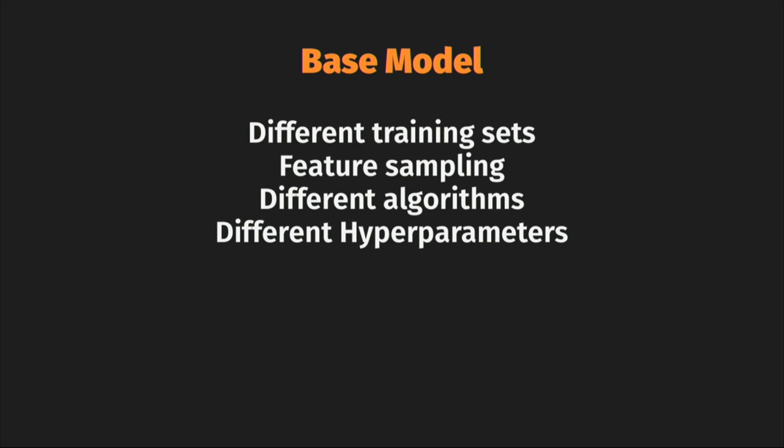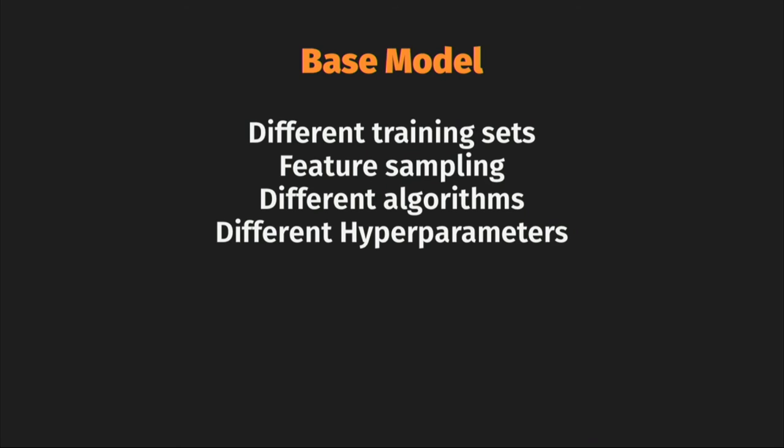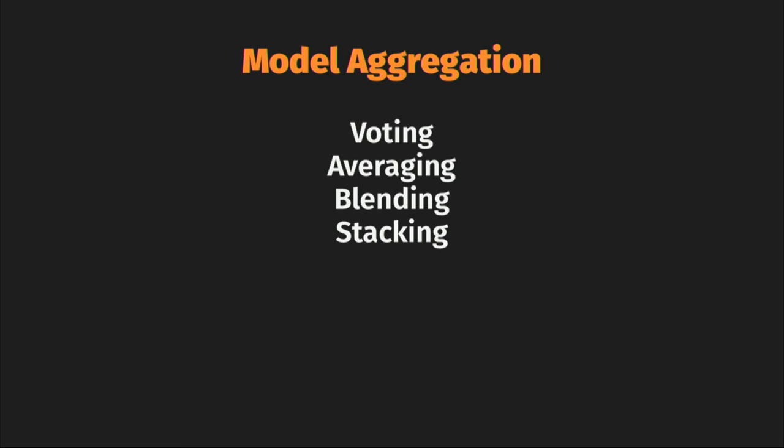There are four important techniques to create base models: use different training data sets by sampling observations, sample on the number of features, use different algorithms — linear regression, random forests, neural networks — and use different hyperparameters for each. Once you have base models, the combination logic can be voting — which we saw — or averaging, if you want probability as your output. If you just want the class output, you vote. And there's blending and stacking.